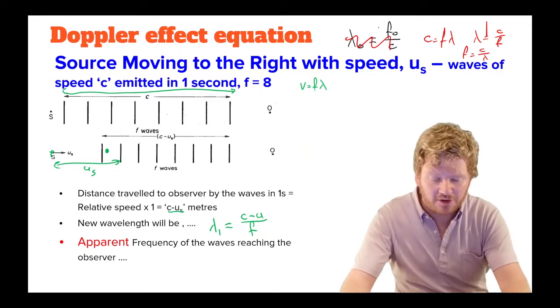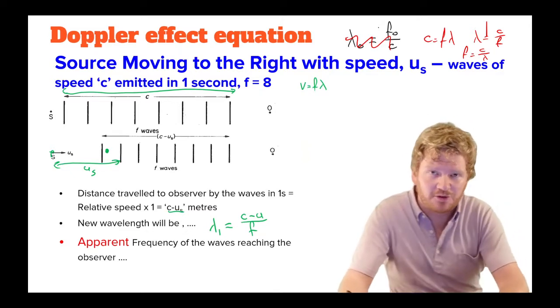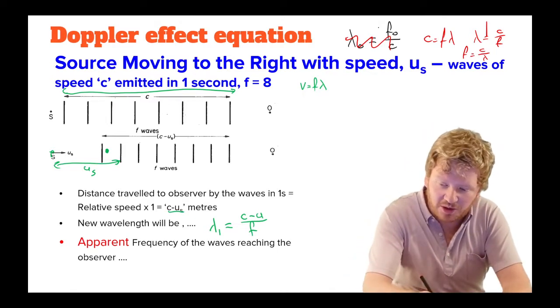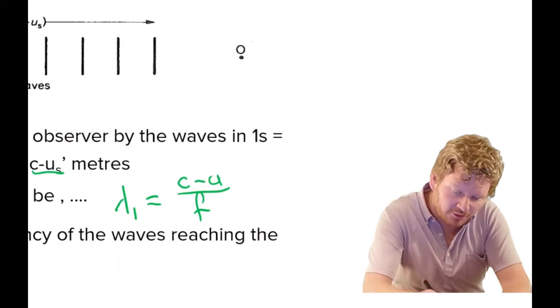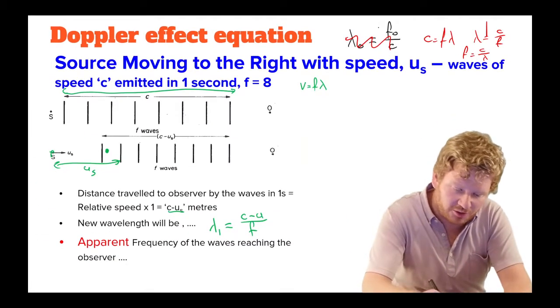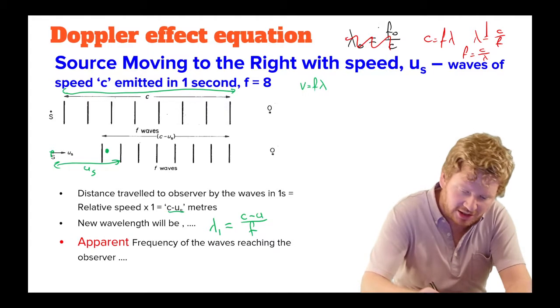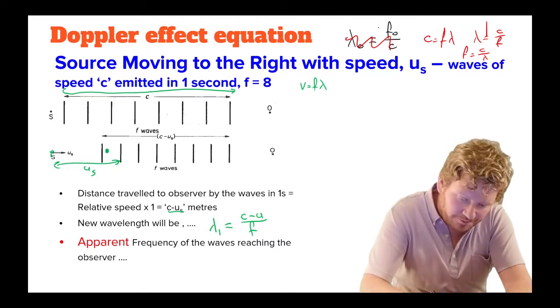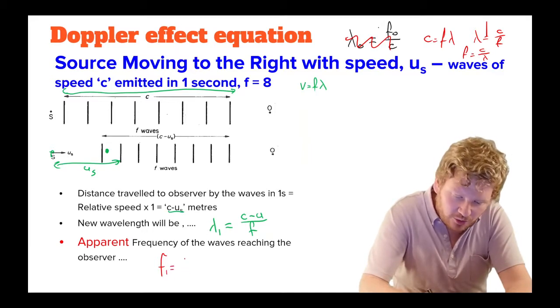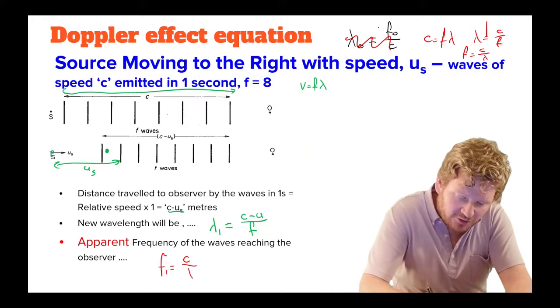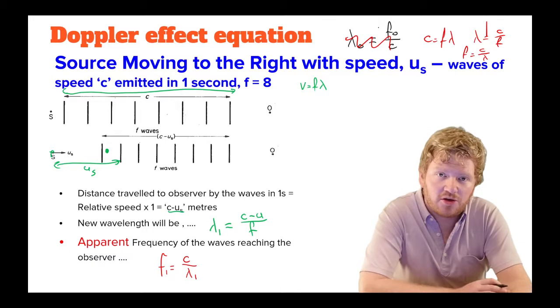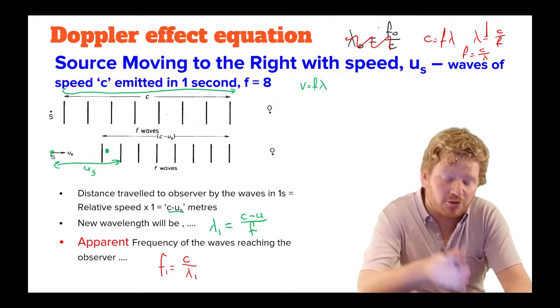So let's think about the apparent frequency. That's the frequency that the person listening to the waves will hear. Let's use the wave equation again. So the frequency that they will appear to hear in their ears, or appear to see, will be f, which I'm going to call f1 for the received frequency, is equal to the speed of the waves divided by lambda 1, which is the wavelength, the apparent wavelength.